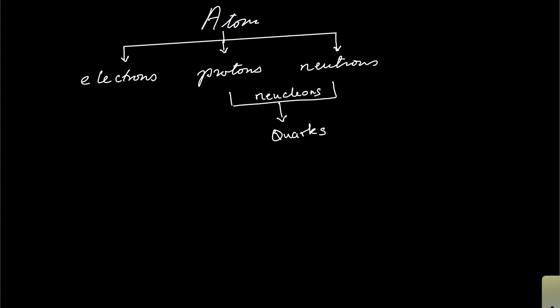Inside the atom, we've got the electrons, the protons, and the neutrons. Inside the protons and the neutrons, we find even smaller particles that are called quarks.